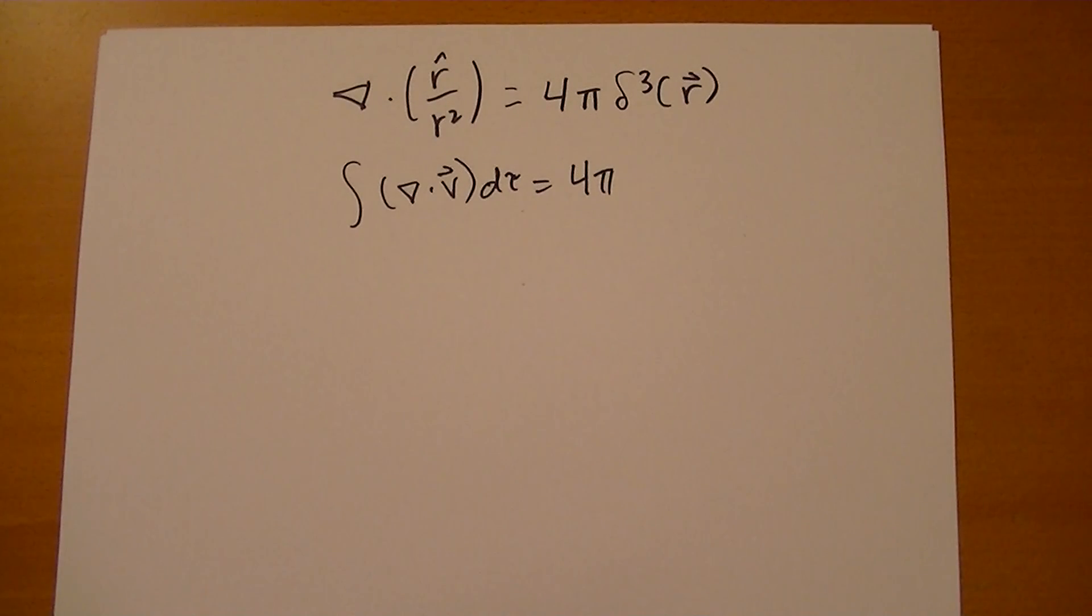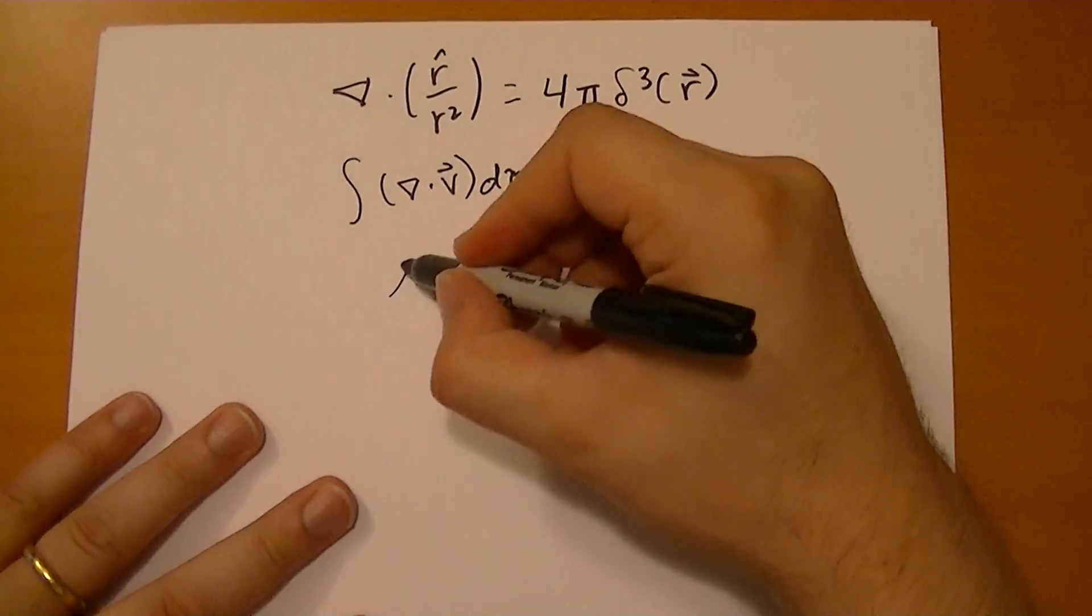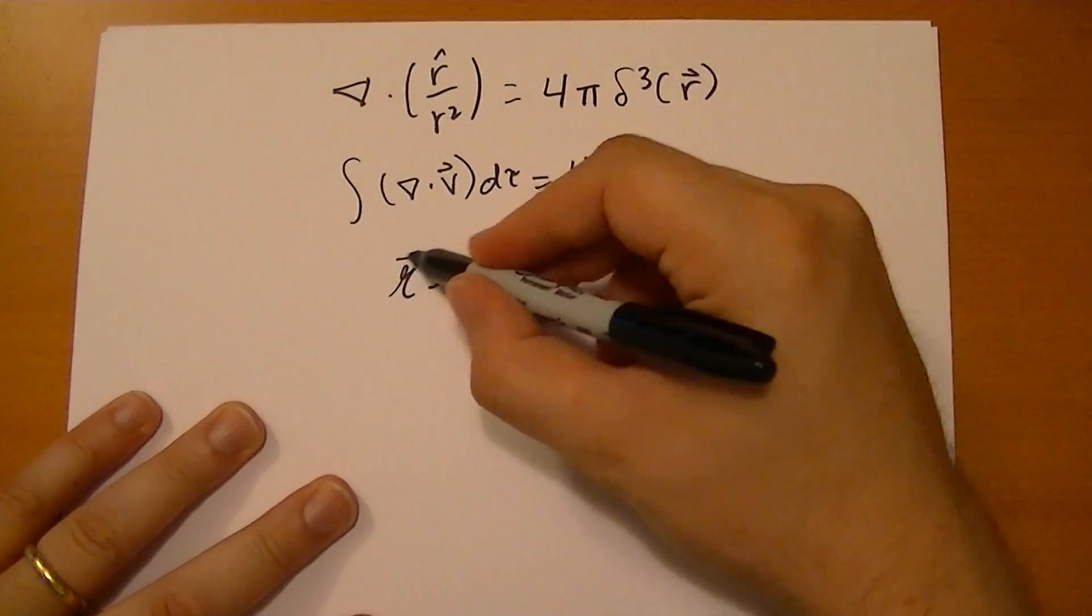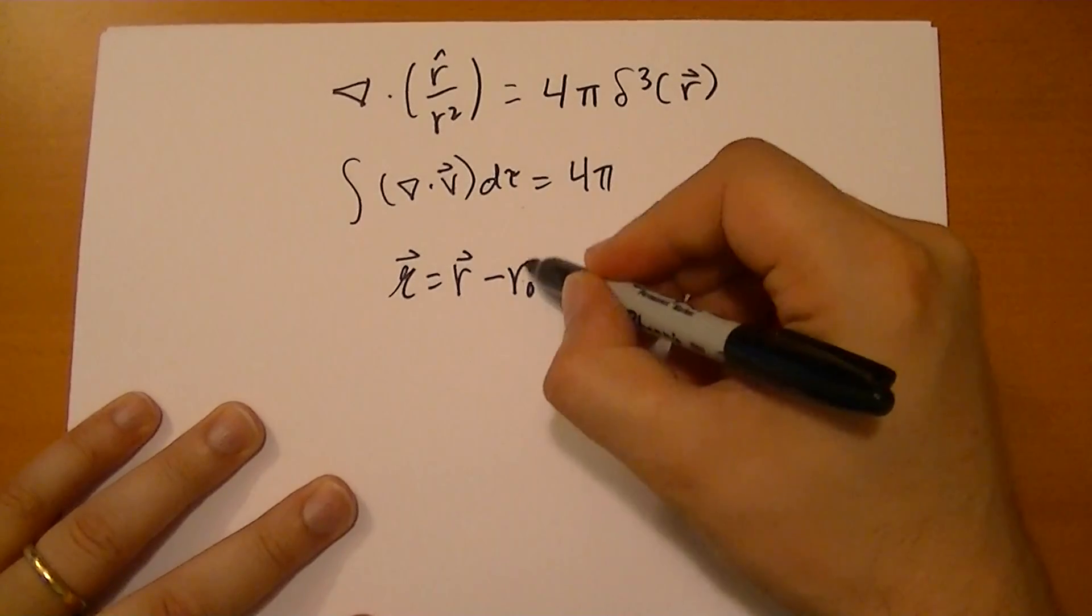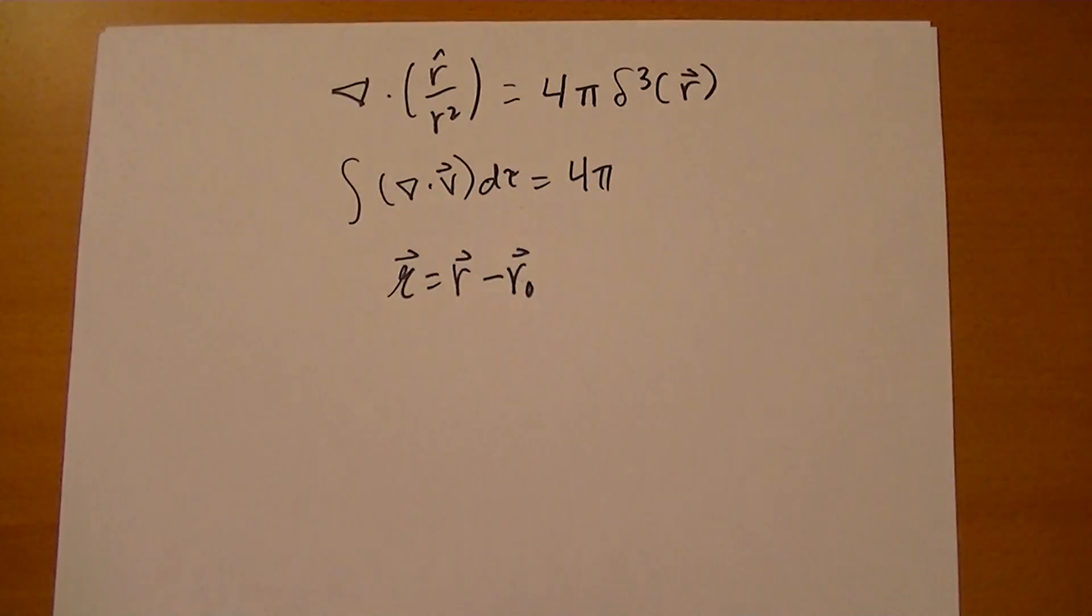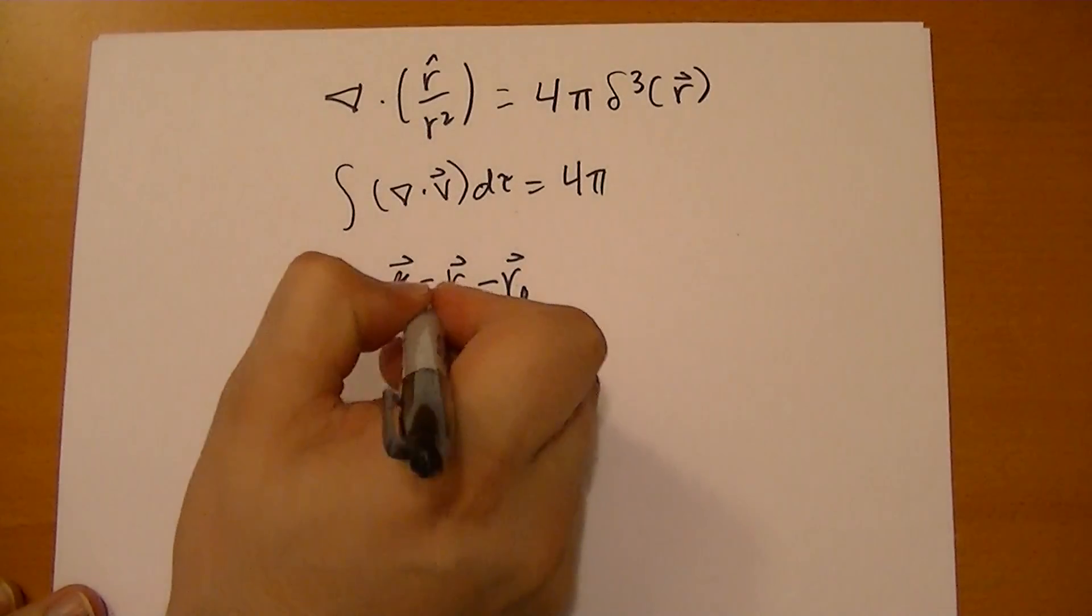So more generally, if you define this curly r to be r vector minus some common boundary point, and we're going to define, so it's just 3 equals there.